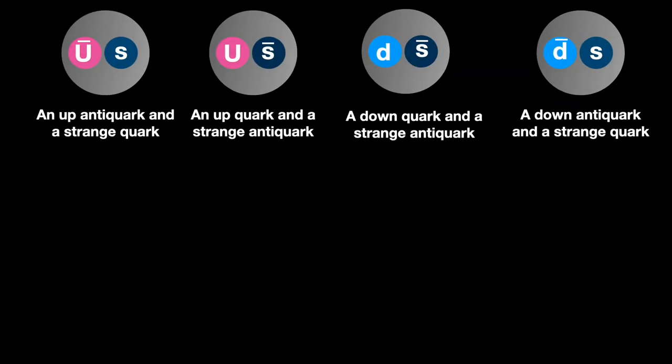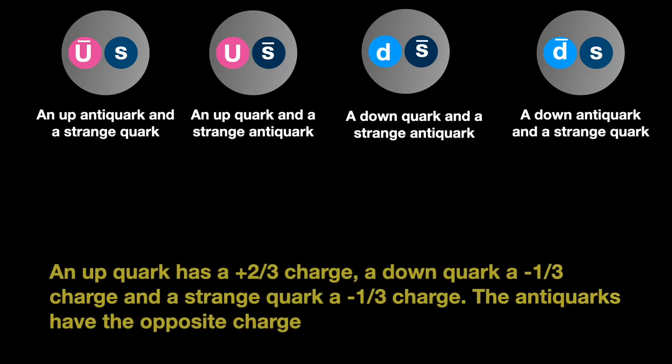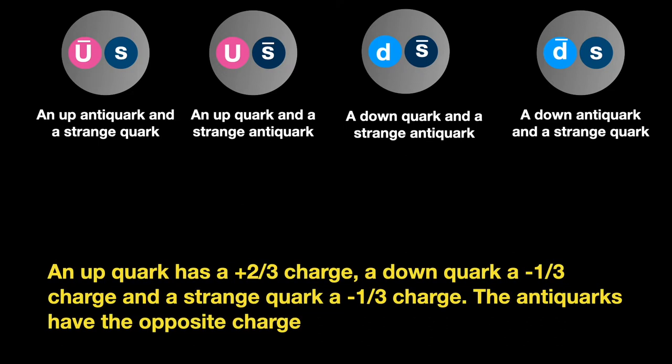An up quark has a charge of plus two thirds, and a down quark minus one third, as has a strange quark. An anti-up will have a charge of minus two thirds as well. So the total charge on the first is minus one. Using the same addition and reasoning, the charge on the second is plus one. The final two both have zero charge, but they are opposites of one another. The symbols are K-nought and K-nought-bar.